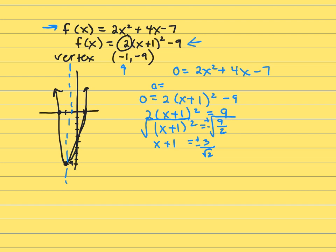And we do not want to leave a radical in the bottom. So let's rationalize it by multiplying top and bottom by square root of 2. So that gives me plus or minus 3 square root of 2 over 2.